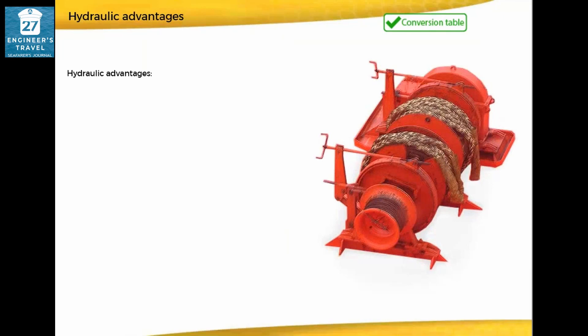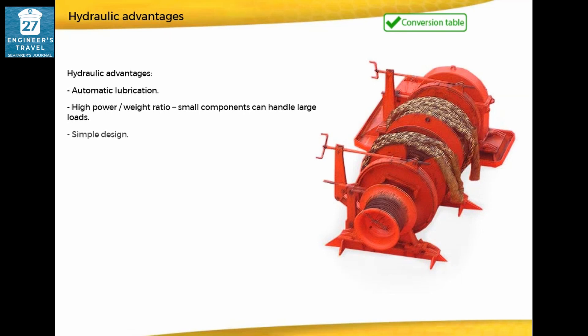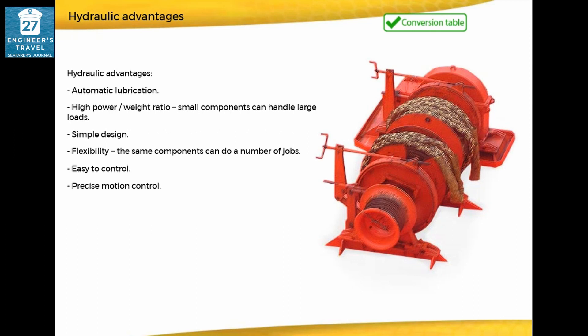Hydraulic advantages include: automatic lubrication, high power-to-weight ratio, small components can handle large loads, simple design, and flexibility — the same components can do a number of jobs. It is also easy to control, with precise motion control and speed control. A hydraulic motor can be controlled from 1 RPM to more than 1000 RPM.